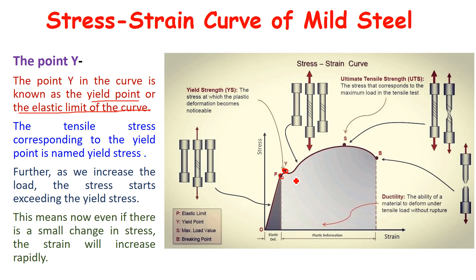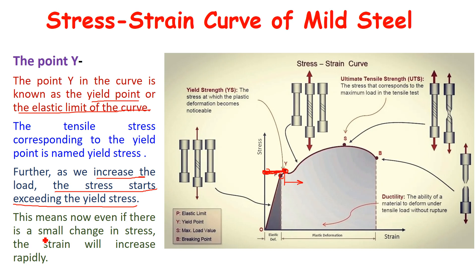Necking starts from point Y. The stress corresponding to point Y is called yield stress, or the tensile stress corresponding to point Y is called yield stress. After point Y, if you slightly increase the stress, there will be a drastic change in strain. The stress starts exceeding the yield stress, but even after that, even a small change in stress will cause the strain to increase rapidly after point Y.